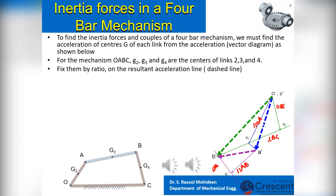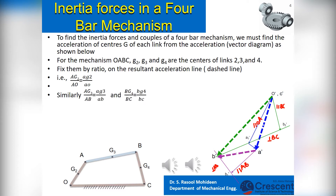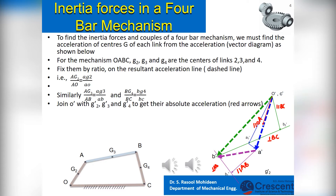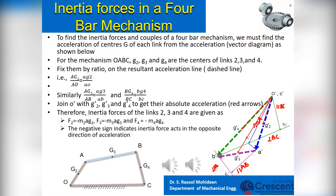That is, vector AG2 divided by vector AB equals length AG2 on link AB divided by length of link AB. Similarly find the position of G3 and G4 considering the ratio of respective vectors and lengths of points in the respective links. Join the origin pointer with G2, G3 and G4 in the acceleration diagram to get their absolute accelerations, shown as red arrows. Therefore, inertia forces of links 2, 3 and 4 are given as F2 equals minus M2 into AG2, F3 equals minus M3 into AG3, and F4 equals minus M4 into AG4.